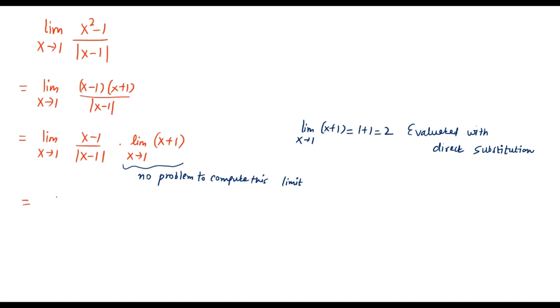So we get here 2 times limit x goes to 1 of (x minus 1) divided by mod of (x minus 1). Now from here I have to split it into left hand limit and right hand limit.